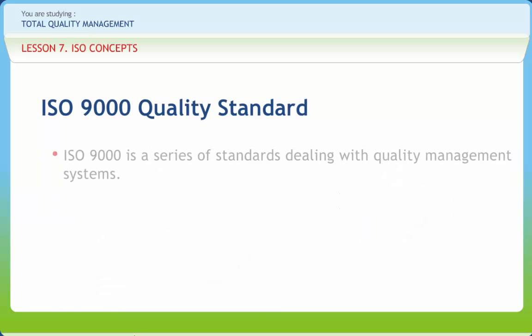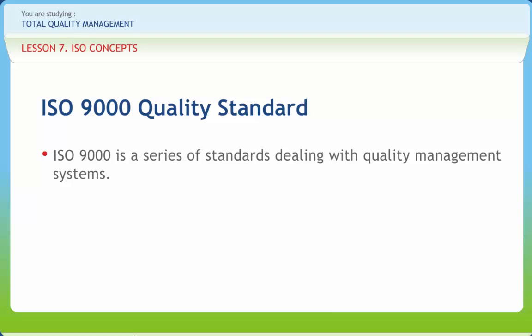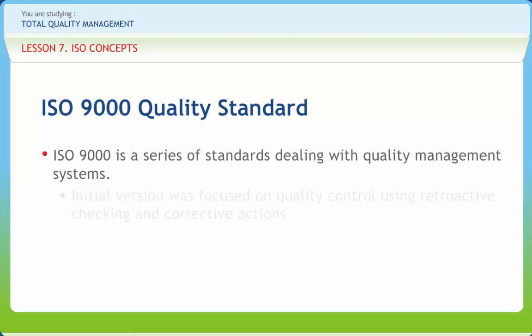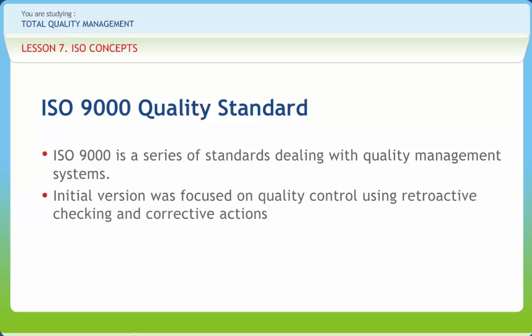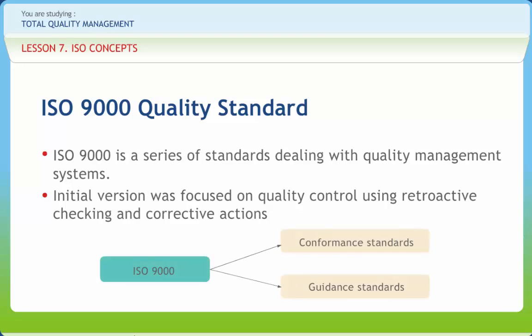ISO 9000 is a series of standards dealing with quality management systems. The initial version was focused on quality control using retroactive checking and corrective actions. ISO 9000 consists of conformance standards and guidance standards. The conformance standards are ISO 9001, ISO 9002, and ISO 9003 and state the requirements for an effective quality system. The guidance standards recommend how to use the series, develop quality systems, and apply the requirements in various industries.